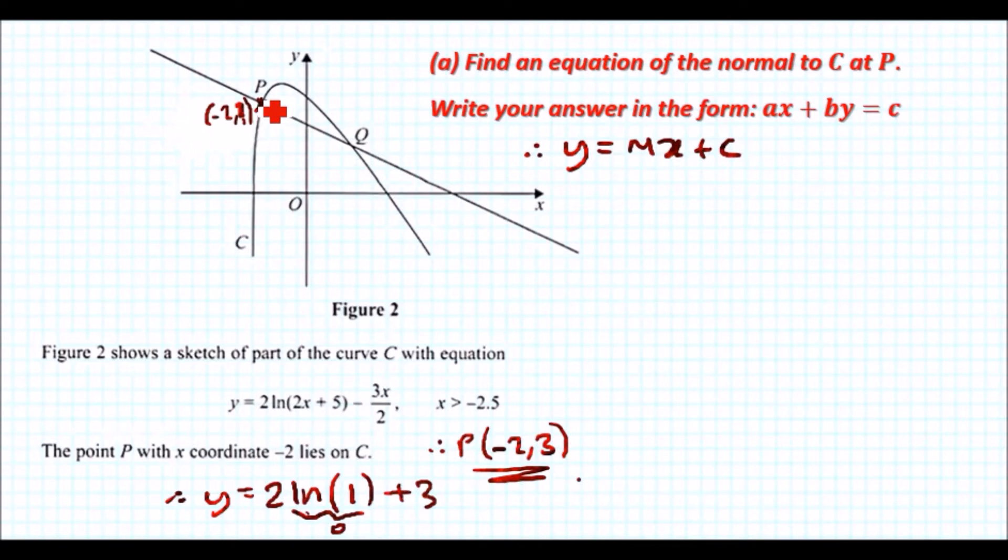Now to find the gradient, we need to differentiate the equation because the gradient is the change in y with respect to x, which is the derivative. To differentiate the log function: write the 2 as a constant first, then differentiate what's inside and divide by itself. The derivative of 2x + 5 is 2, divided by 2x + 5.